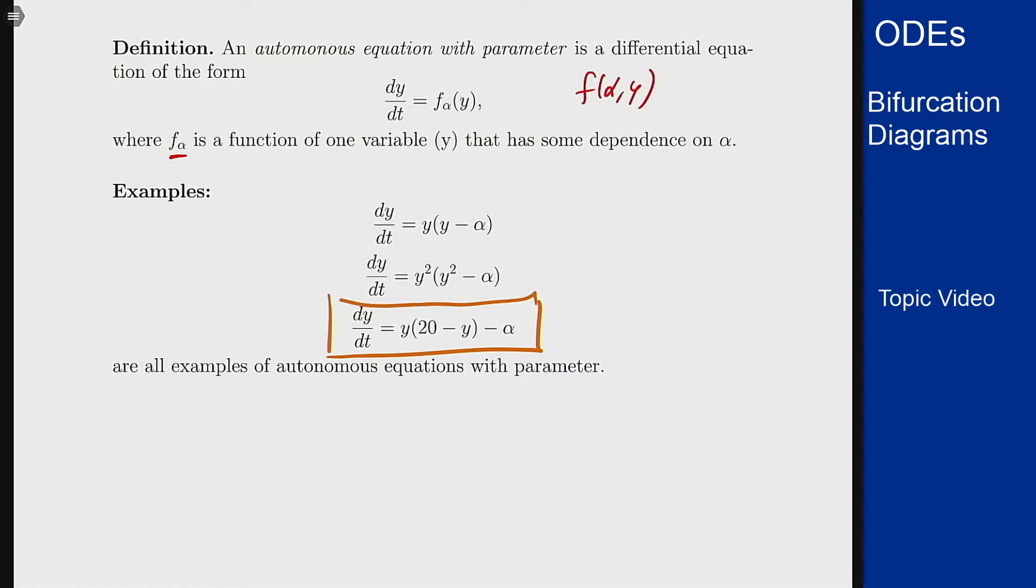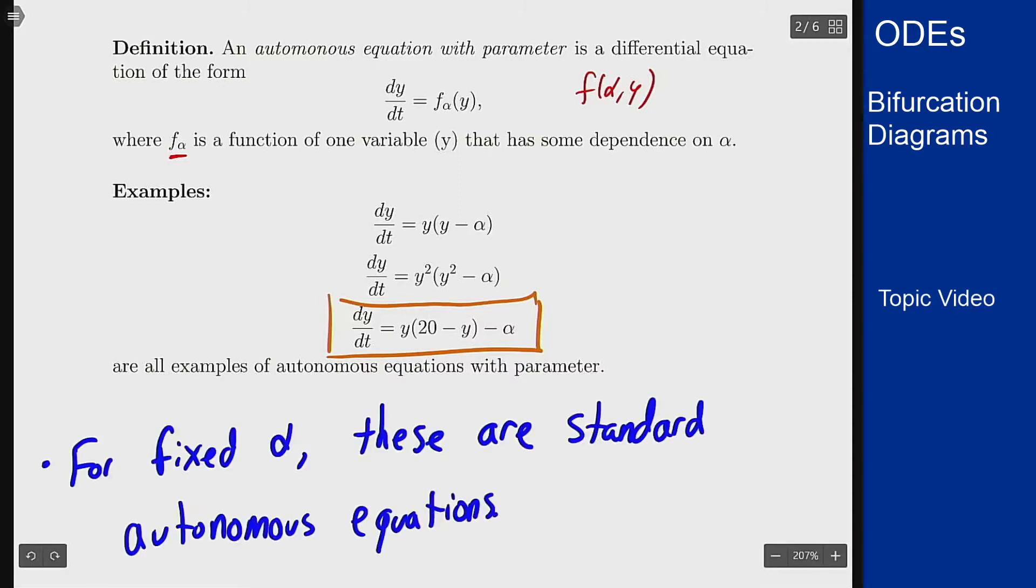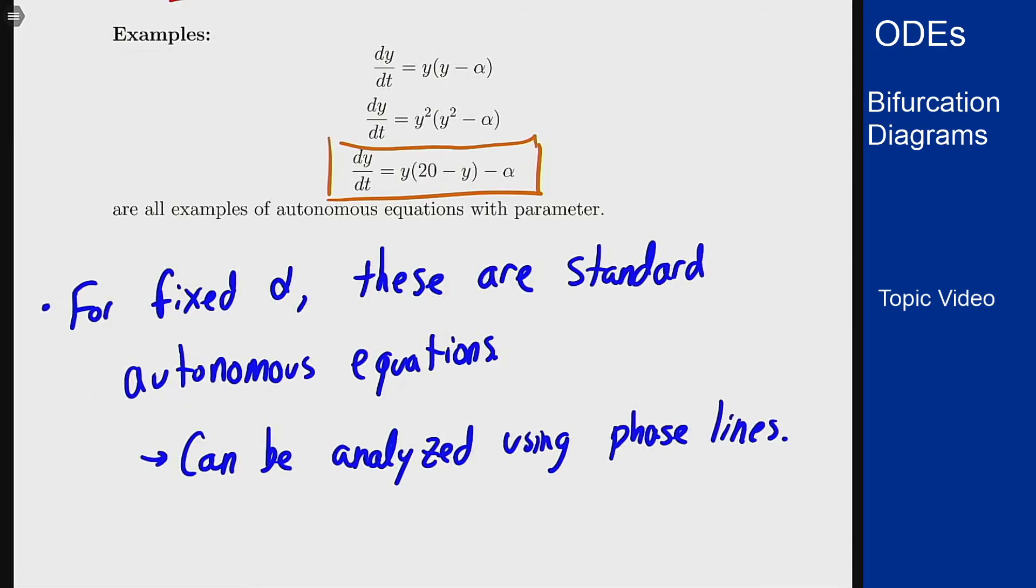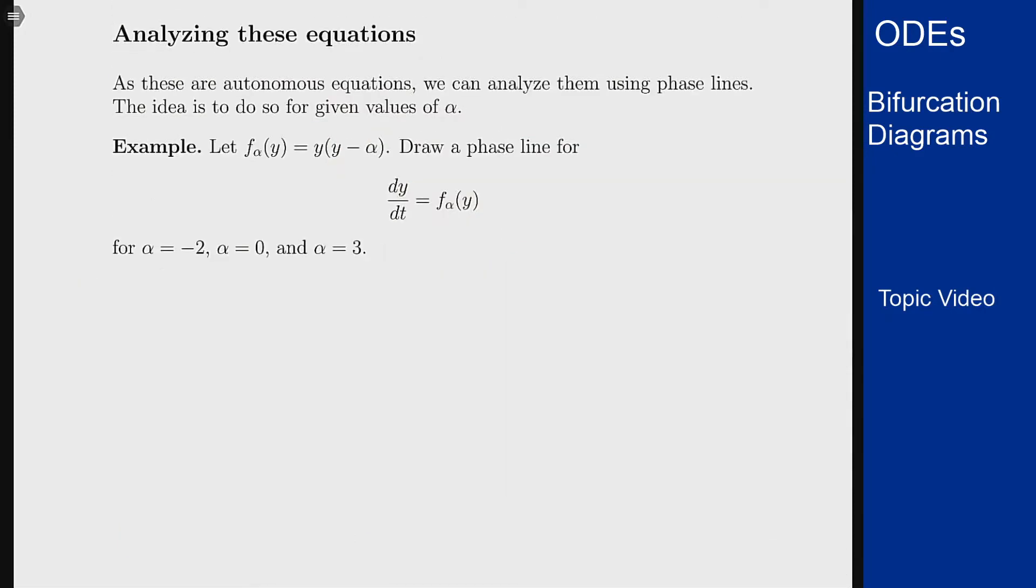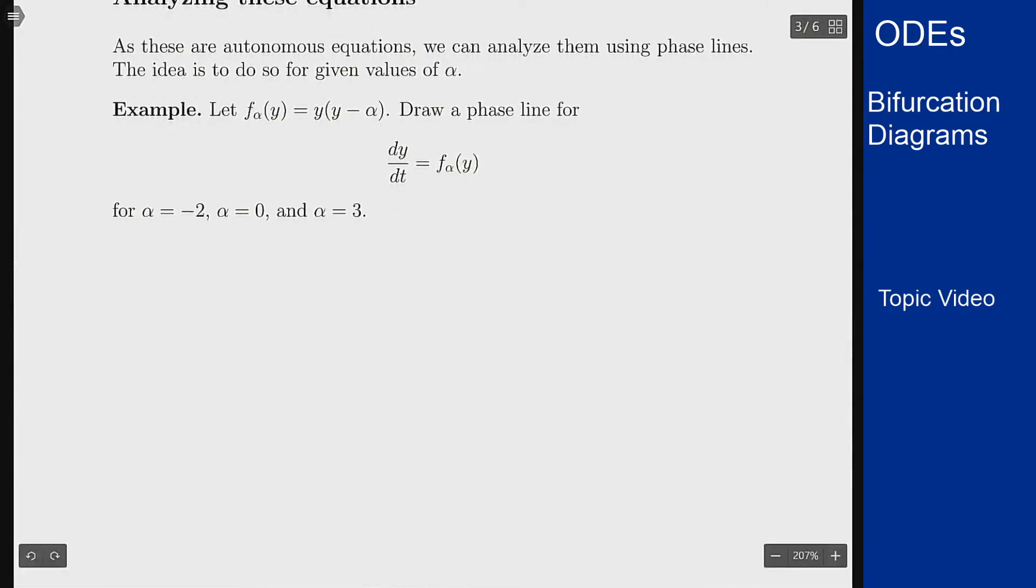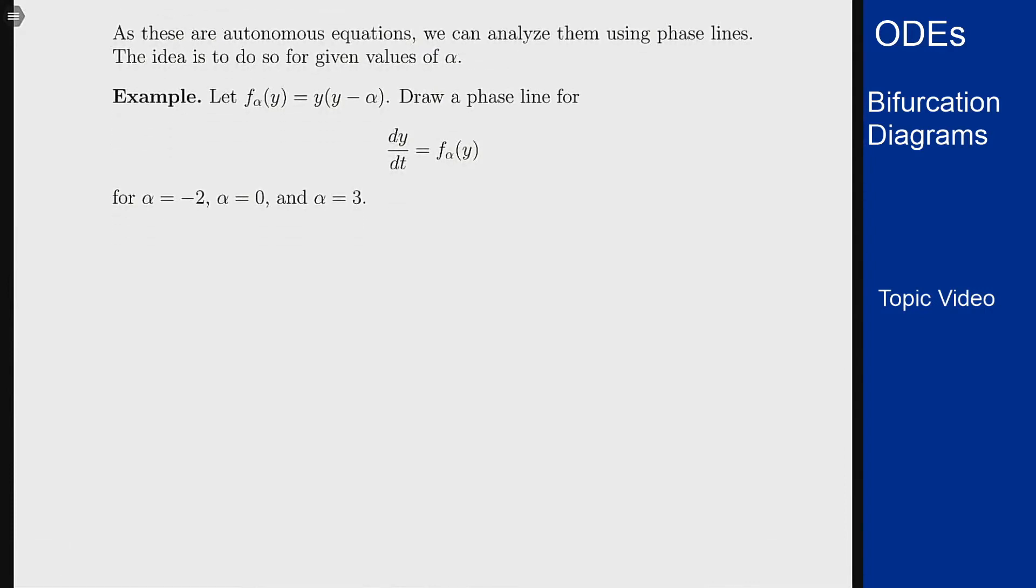The basic idea of how this works is we're going to pick values of alpha, and when we pick a value of alpha we then know how to analyze the equation. Because if I fix alpha, I only have a function of one variable on the right side, which means this is a standard autonomous equation we can analyze using phase lines. We can just draw different phase lines for each alpha.